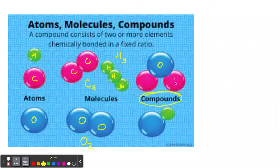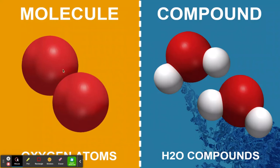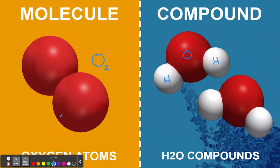The most famous compound - H2O. There are two hydrogen and one oxygen. We know this is dihydrogen monoxide, or water. So that's the difference between molecules and compounds. And here's another picture - we have O2, the air we breathe, and here is dihydrogen monoxide: oxygen and two hydrogen. These compounds have bonds, and there are types of bonds we're going to talk about very shortly.